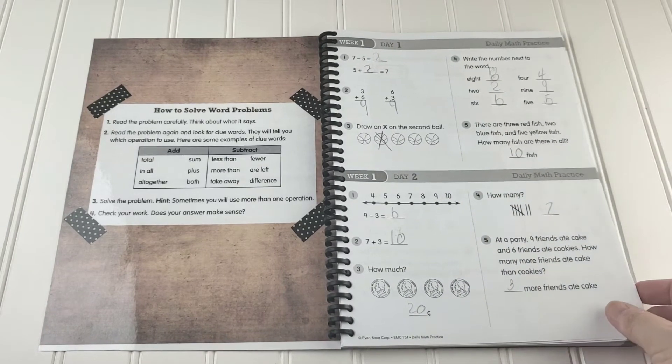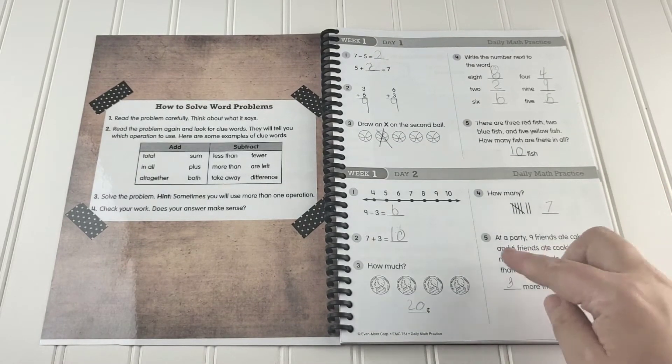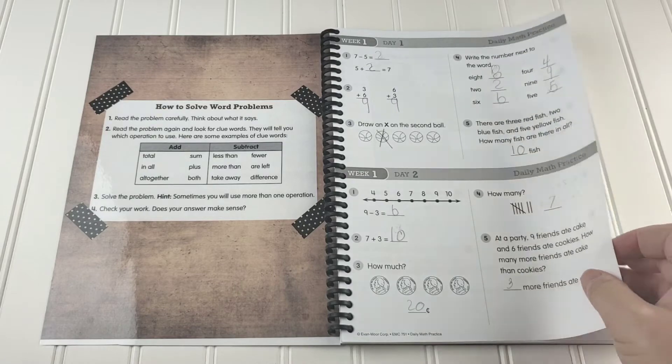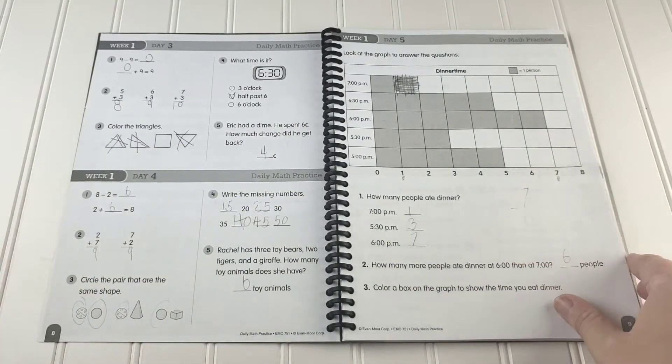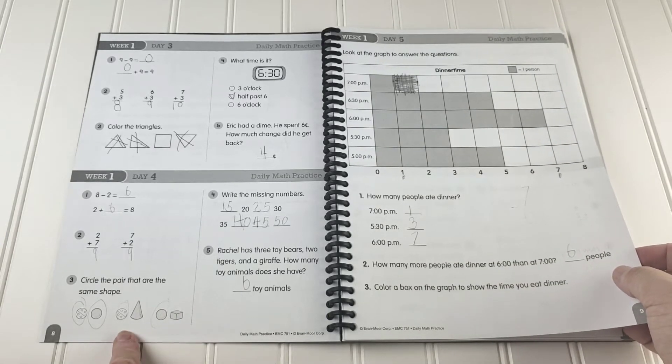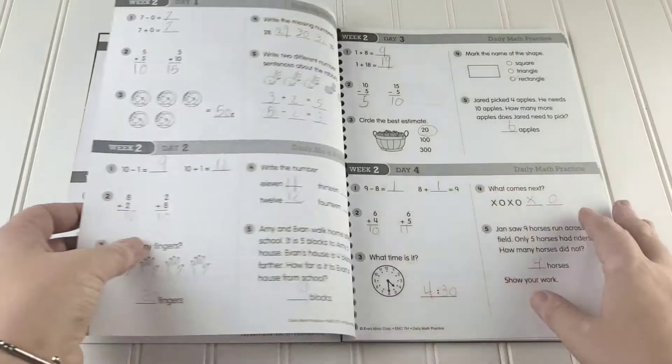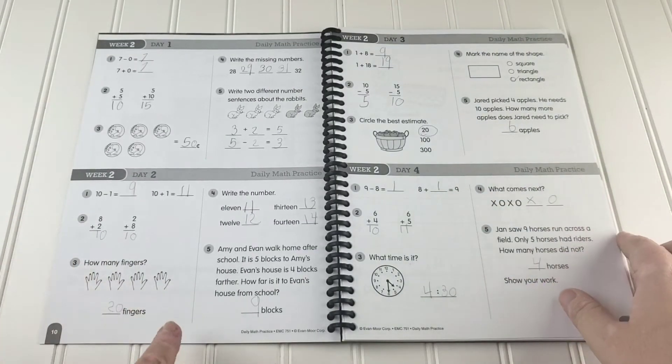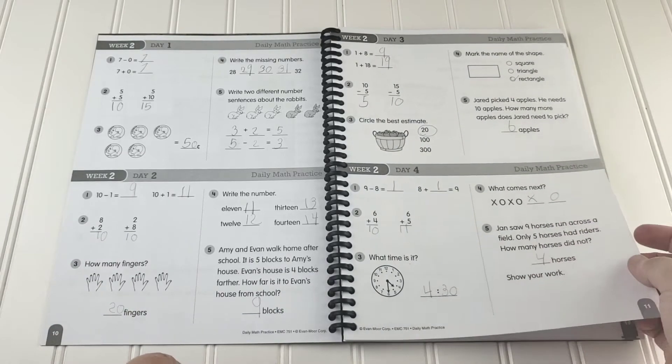Some of the things I really like are that it has different varying things each day. So she's never really doing the exact same thing and it also kind of spirals around and through different things. So you can see here we're doing some shapes, we're doing a graph, we're doing some time. It's always a little bit different. We're counting by fives and tens, doing patterns.